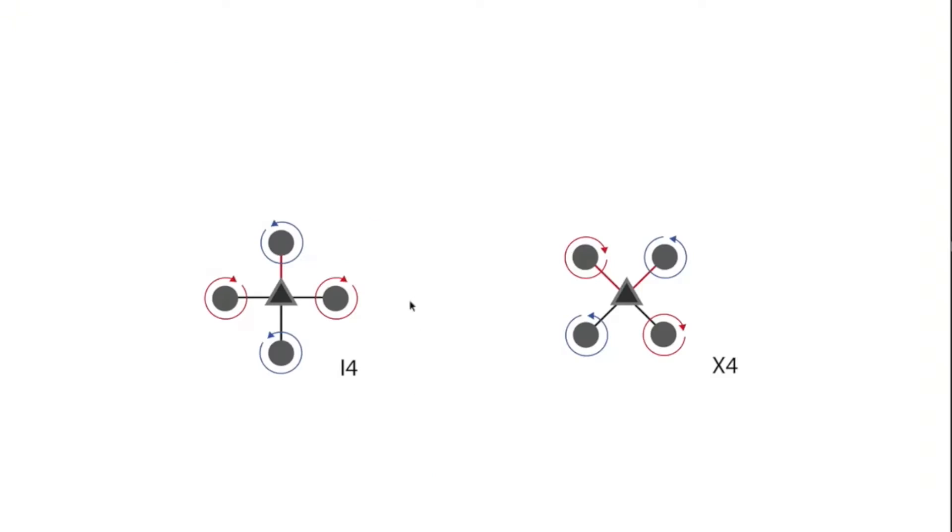First off we have the standard quadcopter, this is four motors. You can see here we have an I4 configuration and an X4 configuration. These are pretty much exactly the same. I4 has the front of the quadcopter in line with one of the booms, so you can see there's only one boom in front. X4 just means that there are two booms in front and the front of the quadcopter is between those two booms.